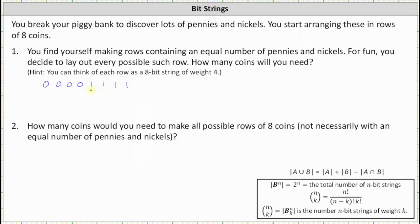So from here, if we determine the number of eight-bit strings with a weight of four, we can determine the number of rows. Once we know the number of rows, we can determine the number of coins by multiplying by eight because each row has eight coins. So to determine the number of rows, we need to determine the cardinality of B84, which is the number of eight-bit strings of weight four.